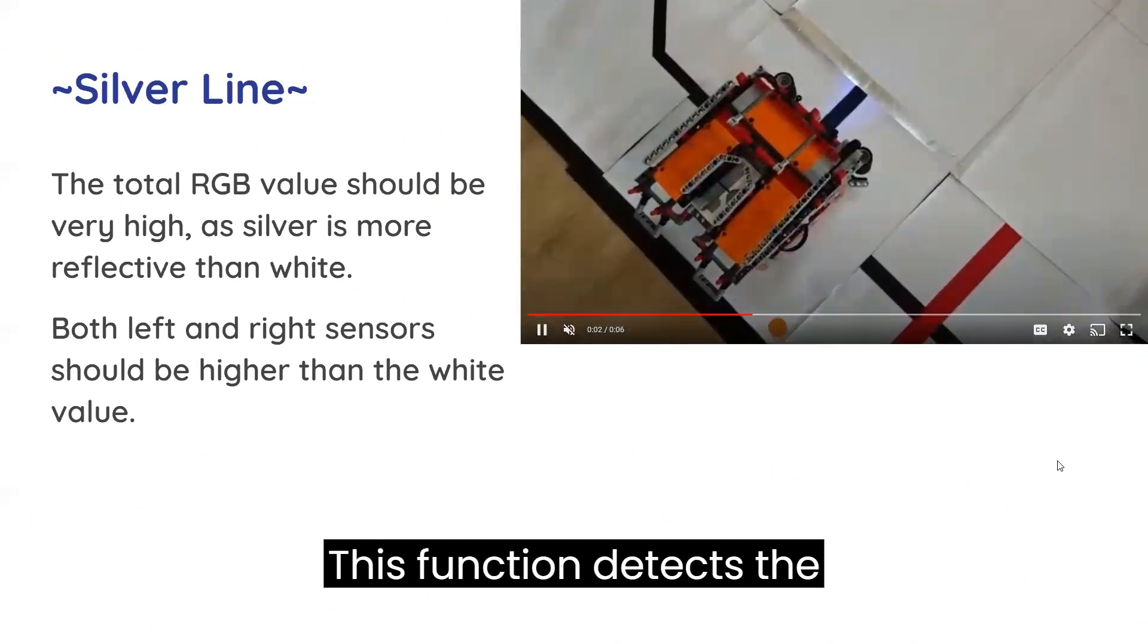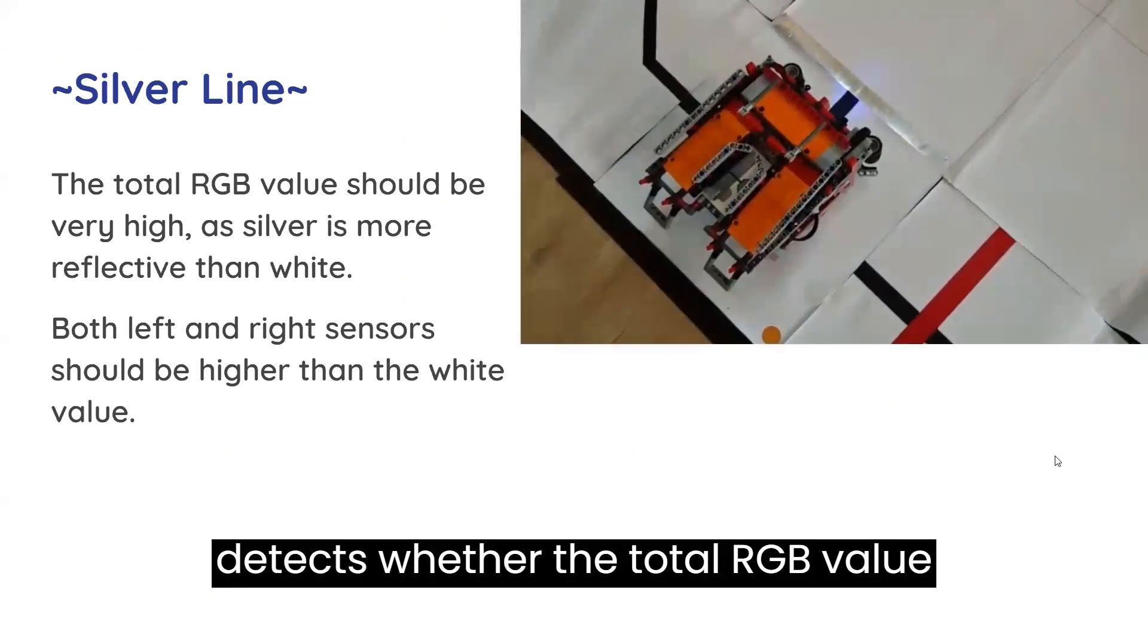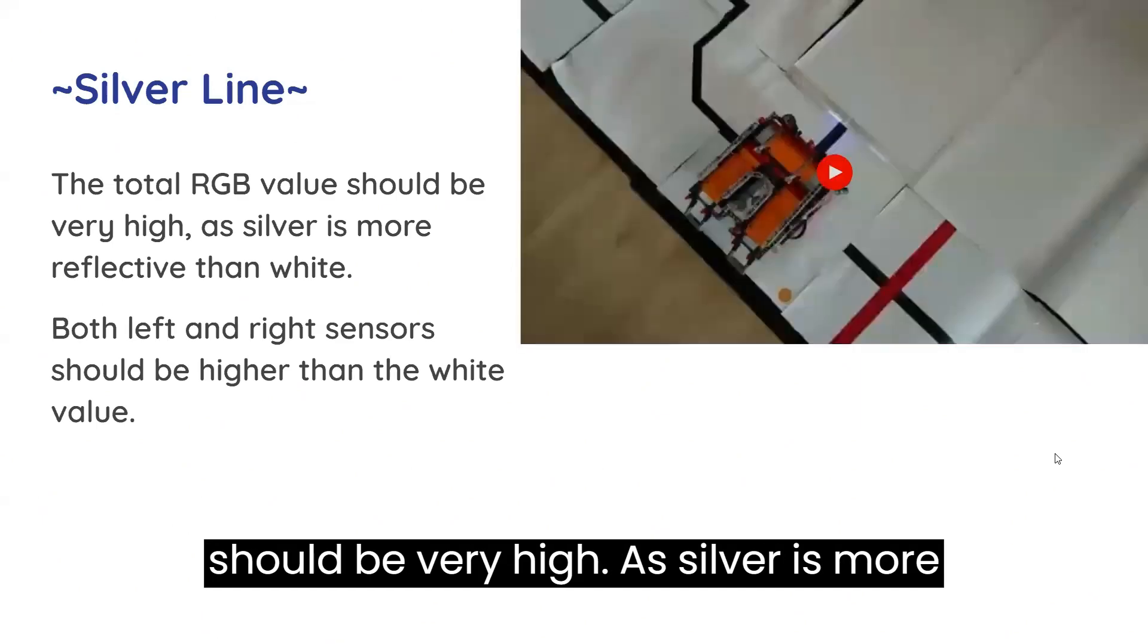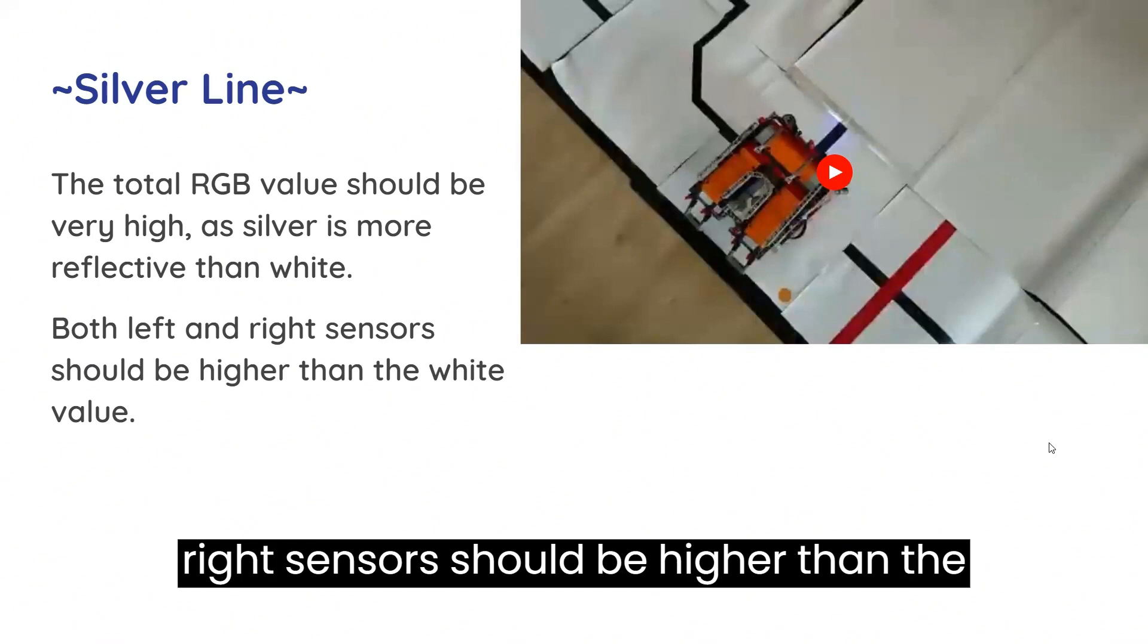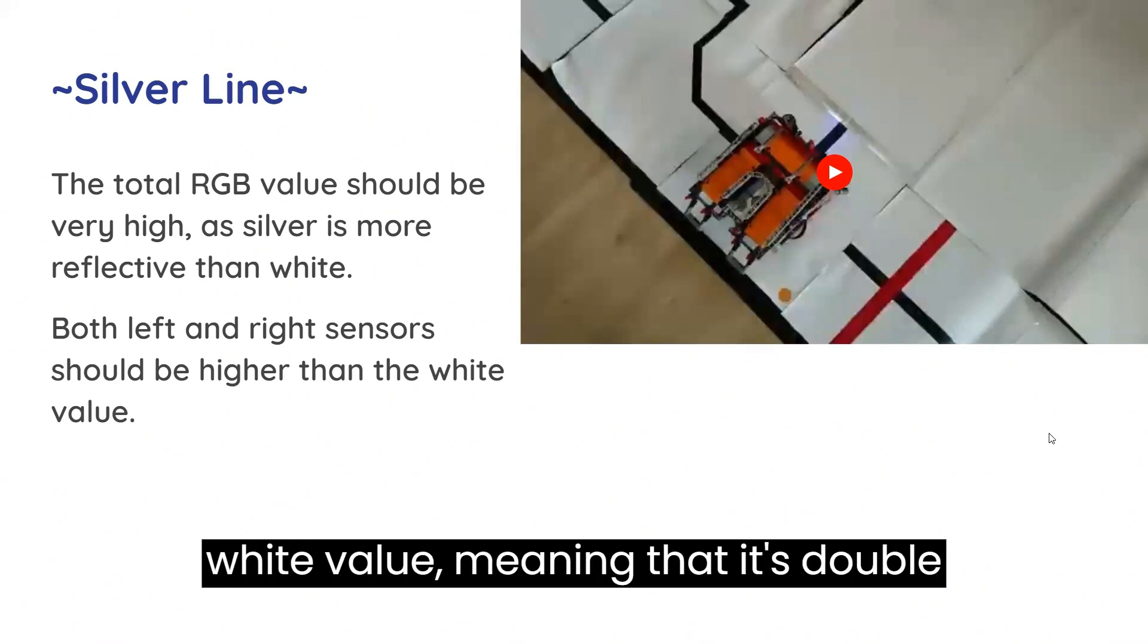This function detects whether the total RGB value should be very high, as silver is more reflective than white. Both left and right sensors should be higher than the white value, meaning that it's double silver.